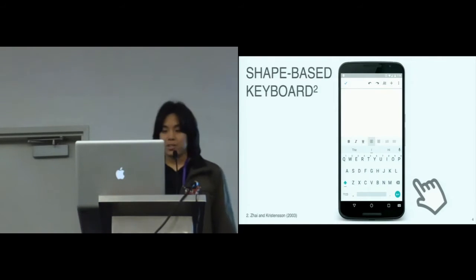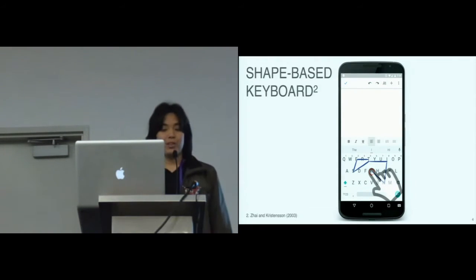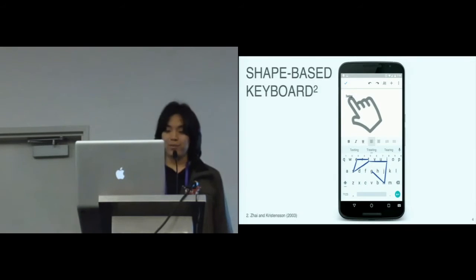To type a word with a shape-based method, the user initially touches the first letter with her finger and moves it through the other letters. When she releases her finger, the word is typed. So the shape defined by the user's touch determines the typed word.